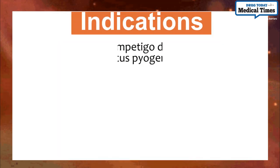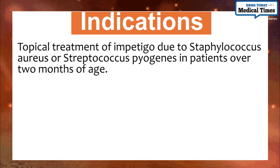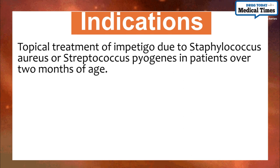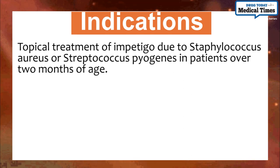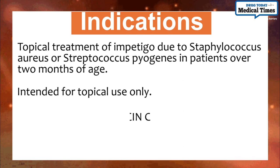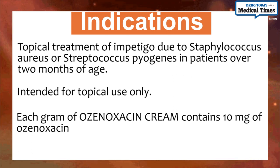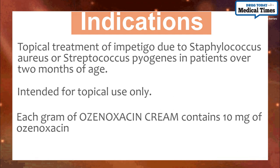Indications: Topical treatment of impetigo due to Staphylococcus aureus or Streptococcus pyogenes in patients over 2 months of age. Intended for topical use only. Each gram of Ozonoxacin cream contains 10 mg of Ozonoxacin.